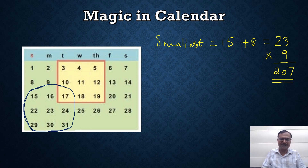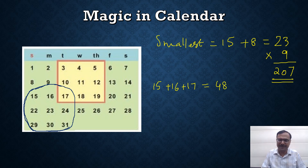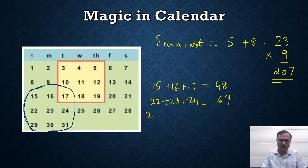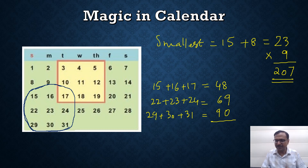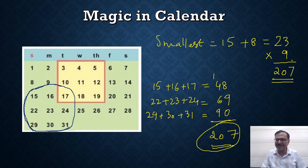Now let's check the sum of these numbers. First row: 15 plus 16 plus 17 equals 48. Second row: 22 plus 23 plus 24 equals 69. Last row: 29 plus 30 plus 31 equals 90. Let's add all these 9 numbers — that gives us 207. Oh my god, the same result!